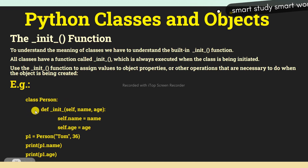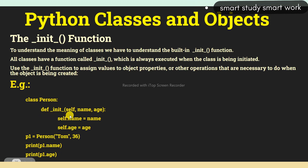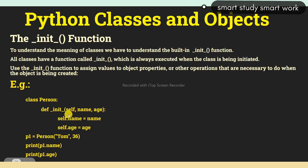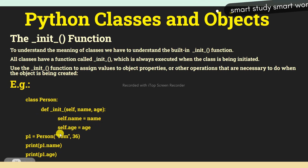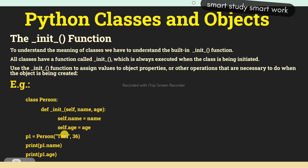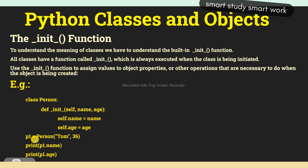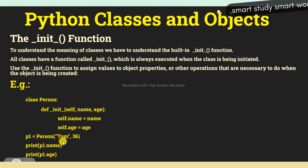Here in this example, I have created a class 'Person'. Inside the class I have declared the __init__ function with parameters self, name, and age. Self is the initialization parameter. Inside the function I write self.name = name and self.age = age. Now creating the object: p1 = Person('Tom', 36), then print p1.name and print p1.age.